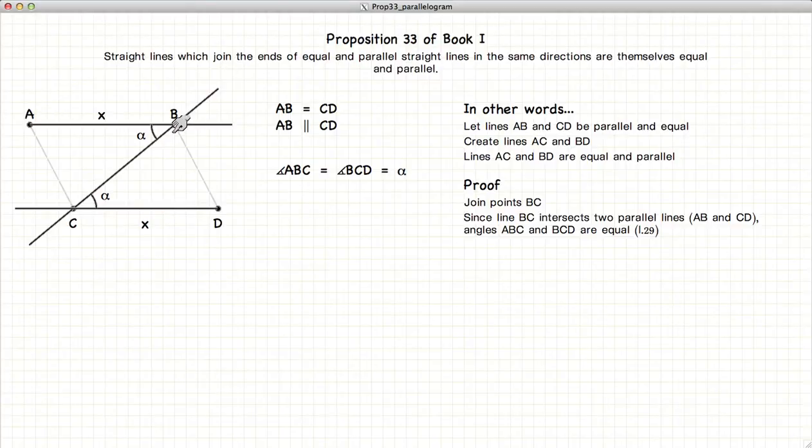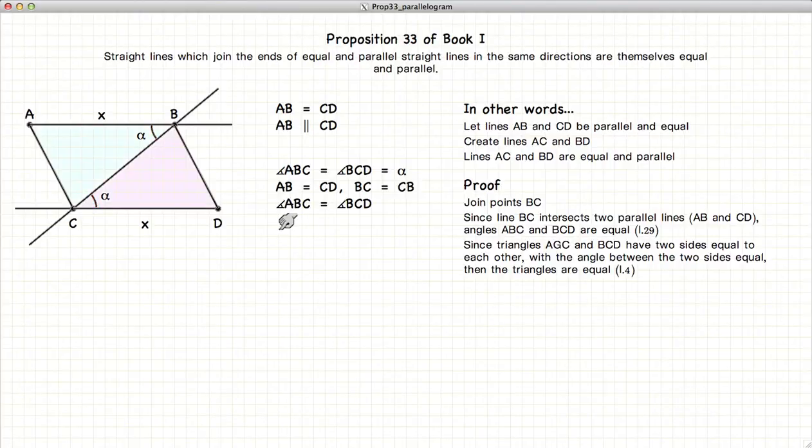Now, if we look at the lines AB and CD, they are parallel, and so by Proposition 29, we know that the angles ABC and BCD are equal. Those two angles are equal.